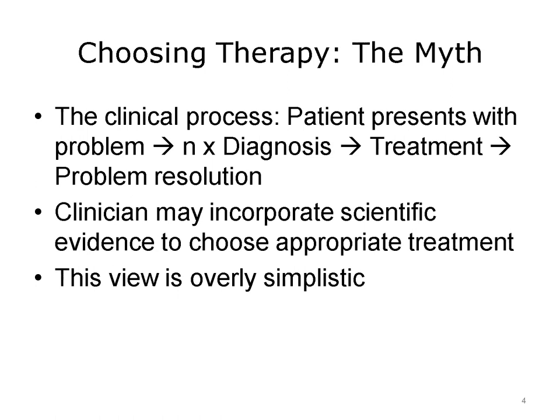This lecture will focus on the issue of deciding how to treat or manage the patient's problem once it's diagnosed. It's easy to think of the clinical process as a fairly straightforward, linear, discrete series of steps. According to this linear view, the clinician starts with a patient care problem, proceeds to determine a specific diagnosis, then incorporates scientific evidence and often local organizational imperatives to choose an appropriate treatment, resulting in resolution of the problem. However, in most cases, the linear view is overly simplistic.